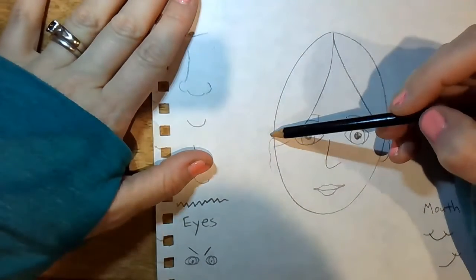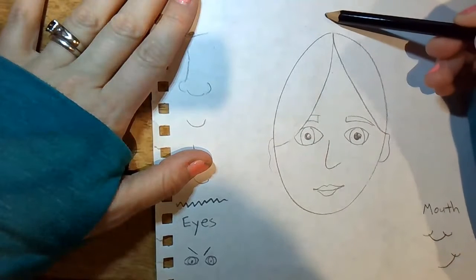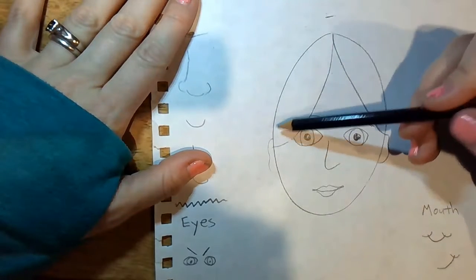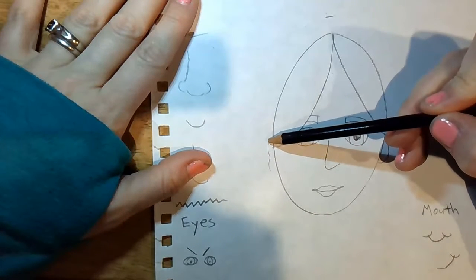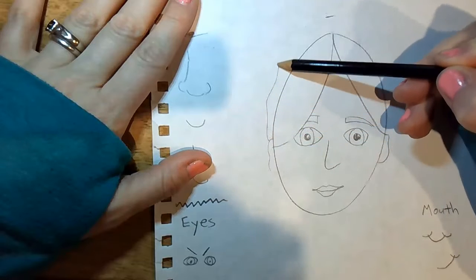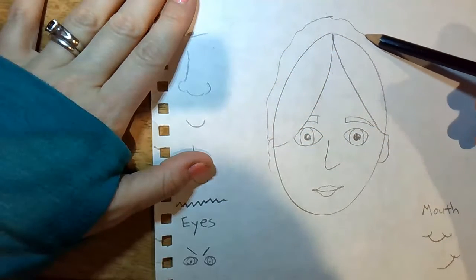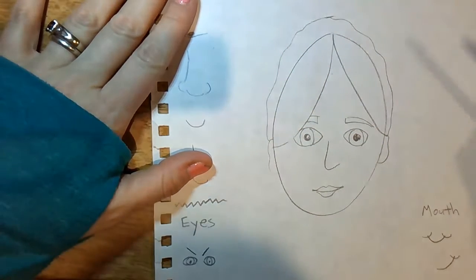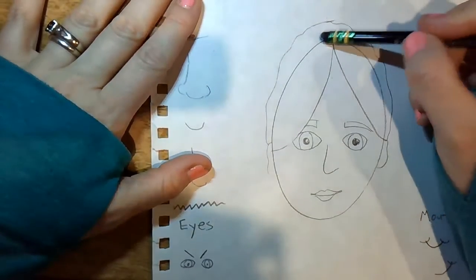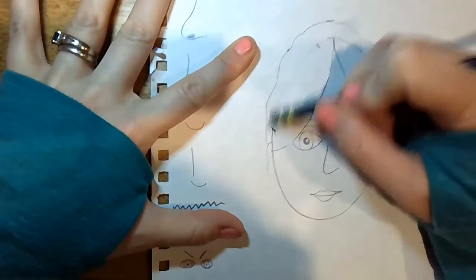Now, everybody has hair above their head. So, make sure you get starting at the ear. We're going to come up. And your hair could be bumpy, straight, spiky. Whatever you want to do. Down to the other ear. Now, you need to go back and erase the head line.